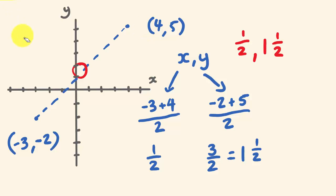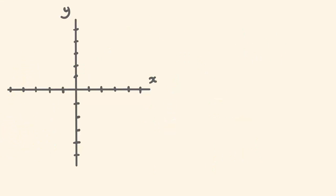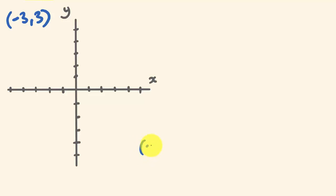I'll go through another example. We'll have a midpoint between the points of minus 3, 3, and we'll call the other one down here 2, minus 4. So let's plot these first. We have minus 3 and 3, which is just here. And we have 2, and we're going to go down 4.